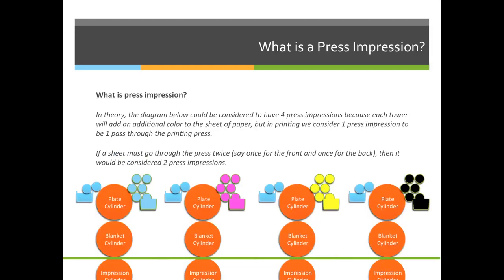To reiterate: in theory, the diagram below would be considered to have four press impressions because each tower adds an additional color to the sheet of paper. But in printing, we're only concerned with how many times a sheet of paper goes through the press. A small sheet of paper passes through the black tower, the yellow tower, the magenta tower, and the cyan tower. If we then take it off the press, flip it over, and put it back through to print the back of the sheet, it would have two press impressions for every one sheet of paper.